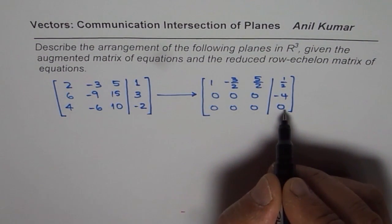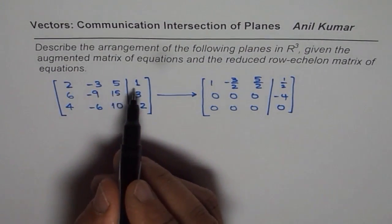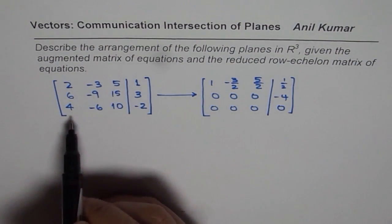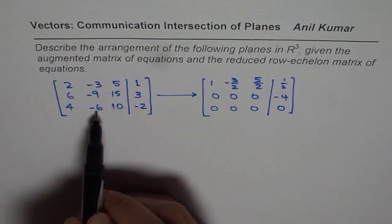Now if you notice the original augmented equation the normals are 2 minus 3 5, 6 minus 9 15, 4 minus 6 10.